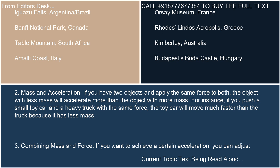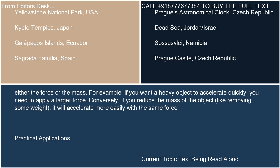Combining mass and force: If you want to achieve a certain acceleration, you can adjust either the force or the mass. For example, if you want a heavy object to accelerate quickly, you need to apply a larger force. Conversely, if you reduce the mass of the object, like removing some weight, it will accelerate more easily with the same force.